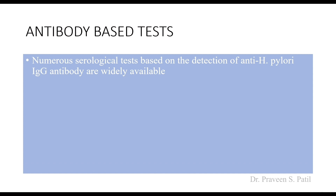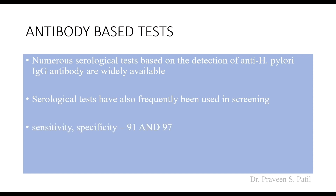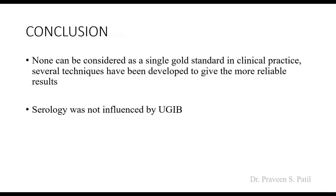Numerous serological tests based on detection of anti-H. pylori IgG antibody are widely available. Unlike previous tests that detect antigen, serology identifies antibodies the body has developed against H. pylori, providing an indirect way to identify infection. Serological tests are frequently used for screening rather than diagnosis. Sensitivity is 91 percent and specificity is 97 percent.